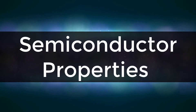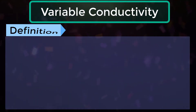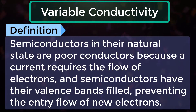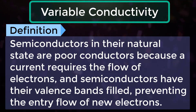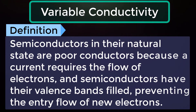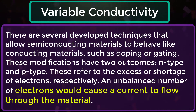Looking at semiconductor properties, let's examine Variable Conductivity. Semiconductors in their natural state are poor conductors because current requires the flow of electrons, and semiconductors have their valence bands filled, preventing the entry flow of new electrons. There are several developed techniques that allow semiconducting materials to behave like conducting materials, such as doping or gating.